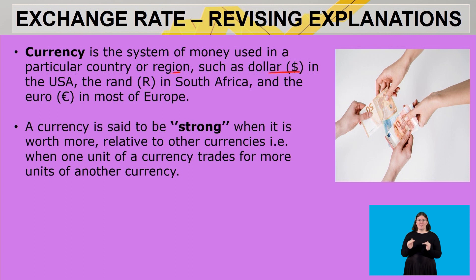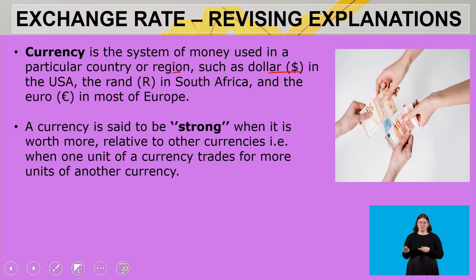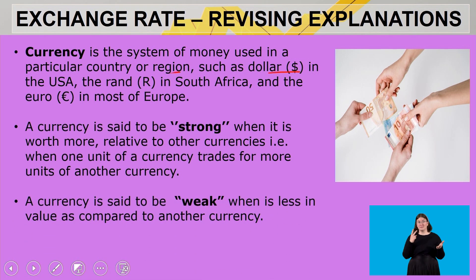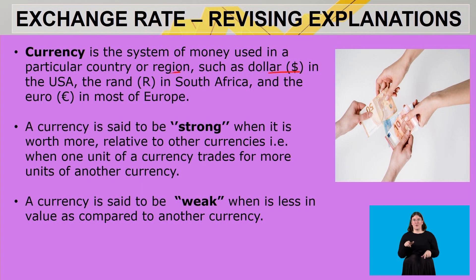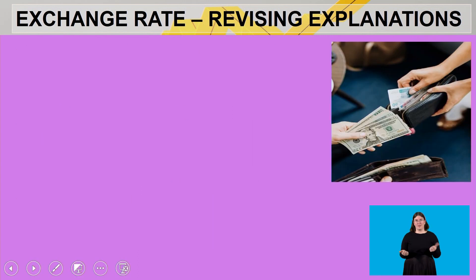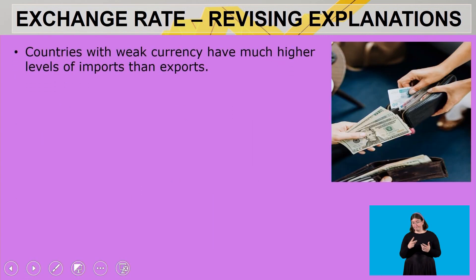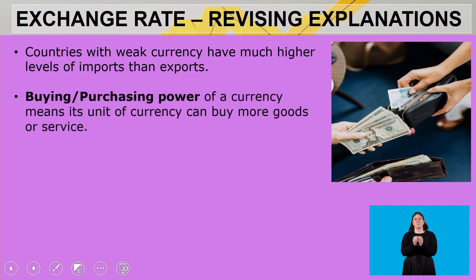An example of a strong currency is when one unit of a currency trades for more units of another currency. We then looked at a weak currency — a currency is said to be weak when it is less in value compared to other currencies. We also indicated that countries with weak currencies have much higher levels of imports than exports.